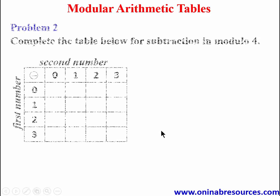We now move to Problem 2: complete the table for subtraction in modulo 4. We have been given the table with elements — remember in modulo 4 the digits are 0, 1, 2, 3. We take this column as the first number and this row as the second number.